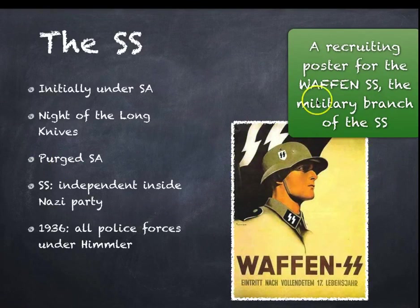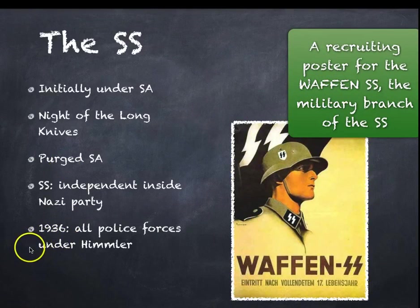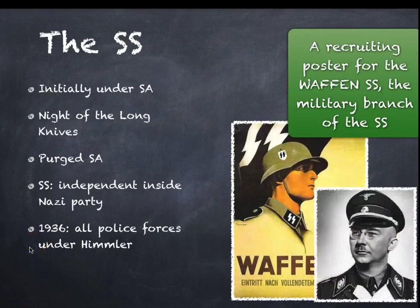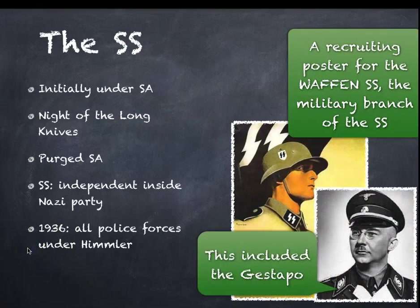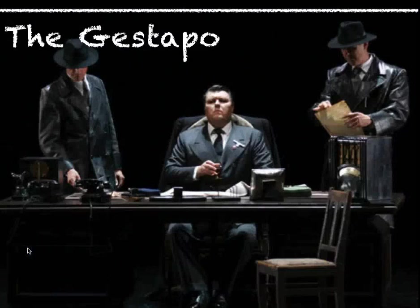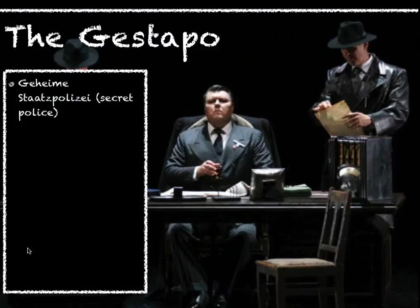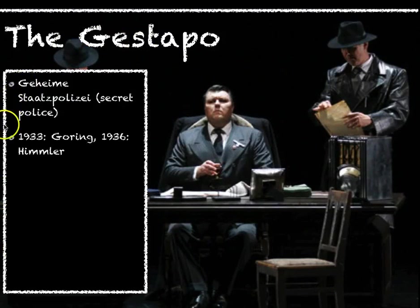Here is a recruiting poster for the Waffen-SS, the military branch of the SS. In 1936, all police forces in Germany were brought under the SS and under Himmler's authority. This included the secret police, known as the Gestapo — Geheimestaatspolizei. In 1933, Goering was in charge of the police in Prussia.